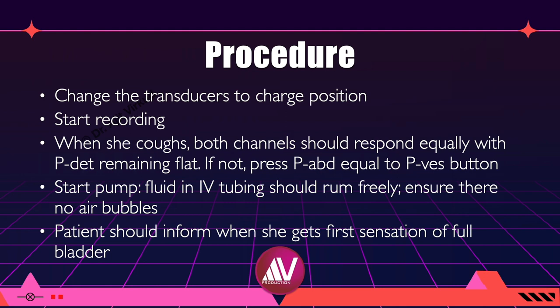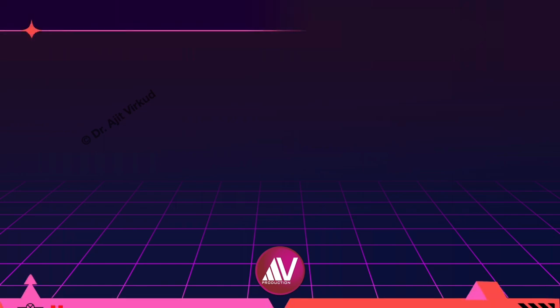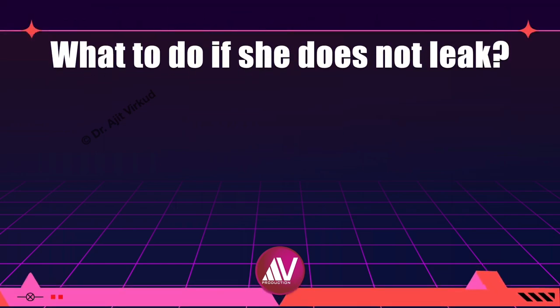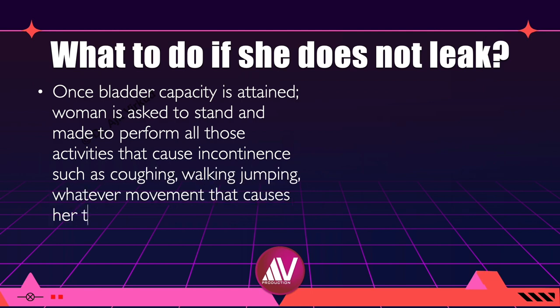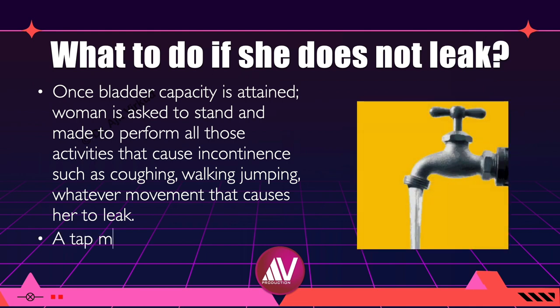If there was a leak, press the stress leak button. After measuring the leak point pressure, start the pump again and record again, stopping every 150 ml or so until you are satisfied that you have a good example of the woman having a stress leak. You can ask the patient to stand up and jump to ensure a leak if required. If the woman does not leak during the test, once bladder capacity is attained, ask her to stand and perform all those activities that caused incontinence — such as coughing, walking, or jumping. Running tap water or putting the woman's hands in cold water may also cause some women to leak.